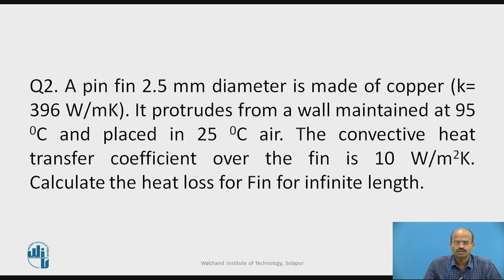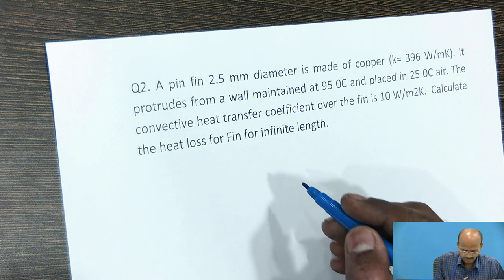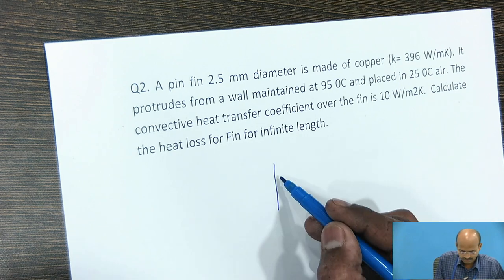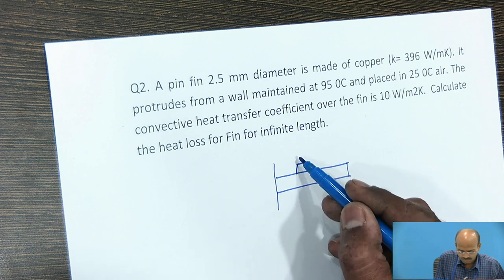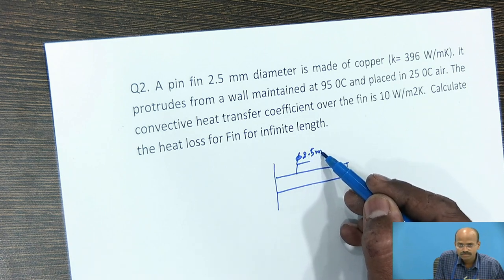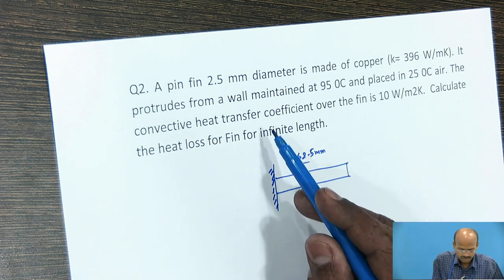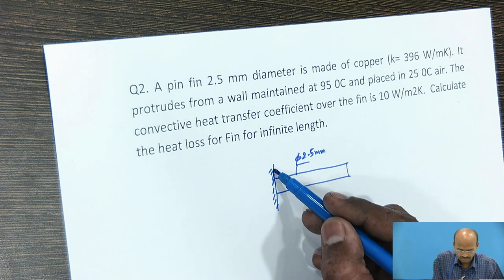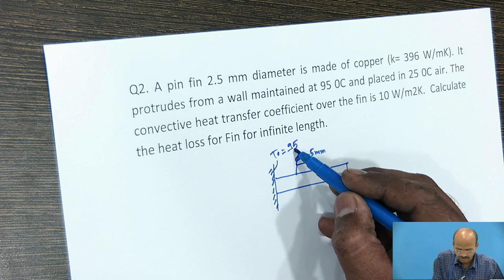Now we will write the given data. A pin fin, diameter 2.5 mm, protrudes from the wall which is maintained, means base temperature becomes 95 degree Celsius.